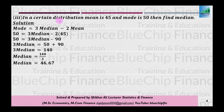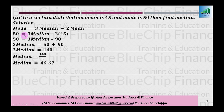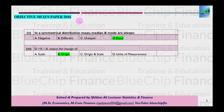Teesra short question: certain distribution mein mean = 45 aur mode = 50 hai, median nikalein. Hum empirical method use karenge jo previous papers mein bhi solve kar chuke hain: Mode = 3 × Median − 2 × Mean. Mean ki jagah 45 aur mode ki jagah 50 rakhein aur equation solve karein. Median = 46.67 aa jayega.